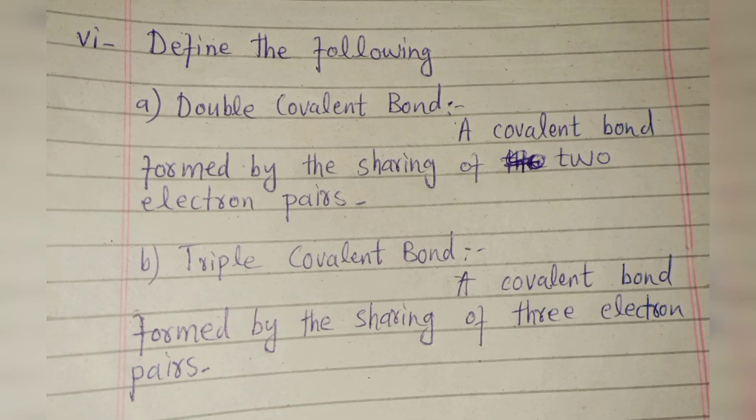Define the following: double covalent bond and triple covalent bond. A double covalent bond is a covalent bond formed by the sharing of two electron pairs. A triple covalent bond is a covalent bond formed by the sharing of three electron pairs.